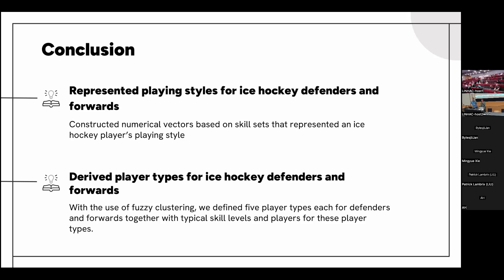Last year we had a paper on player roles where we looked at exactly that for one season in the NHL. We defined different player roles and checked which teams went to the playoffs and which did not. Out of the 16 teams that went to the playoffs, 14 had the same kind of team makeup based on defender and forward types. For teams that didn't make the playoffs, they also mostly had the same kind of makeup — though we don't know if this is a cause or an effect, it was an interesting observation.